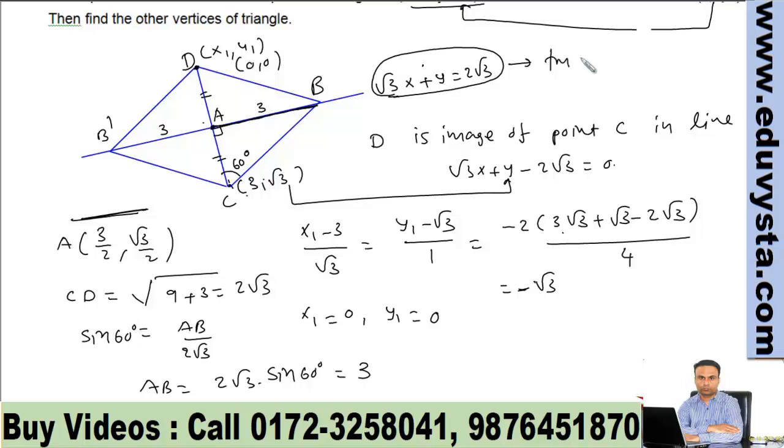The inclination of this line with the x-axis is given by tan θ = -√3, then θ = 120°. From parametric form of straight line, we can get B and B': (3/2 ± 3 cos 120°, √3/2 ± 3 sin 120°).